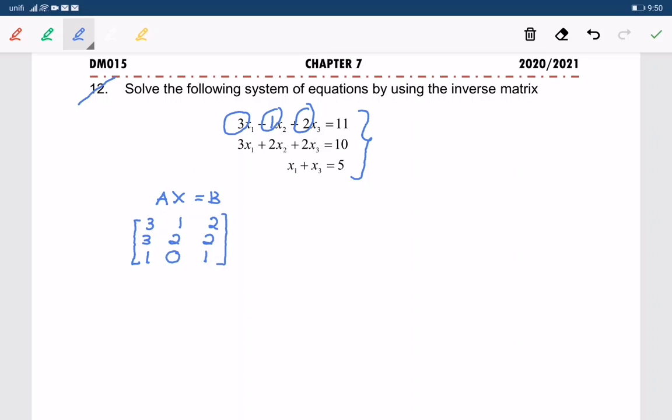And how did I get 0? Because we have missing here the x2. Since no x2, the coefficient is 0. And we have the second matrix which is x1, x2, x3. If your unknown is x, y, z, therefore this matrix becomes x, y, and z. And it is equal to 11, 10, 5.